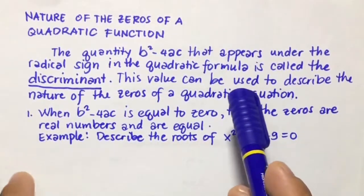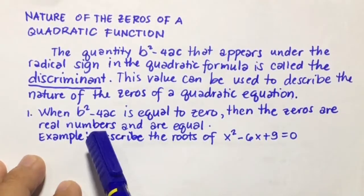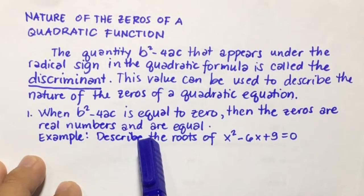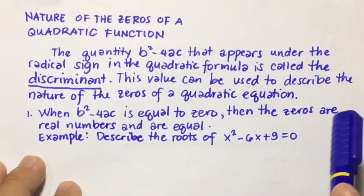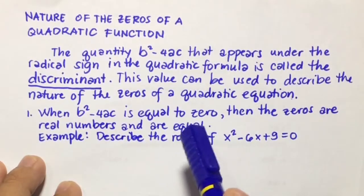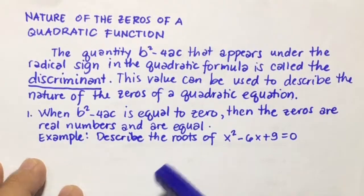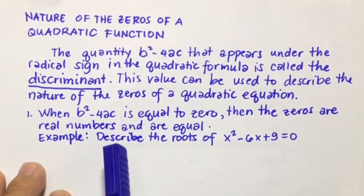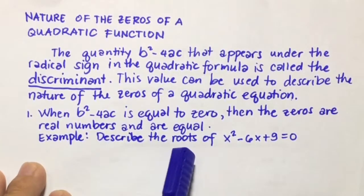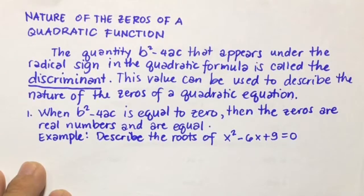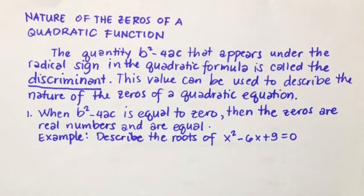Number 1: when b squared minus 4ac is equal to 0, then the zeros are real numbers and are equal. For example, describe the roots or zeros of x squared minus 6x plus 9 equals 0.